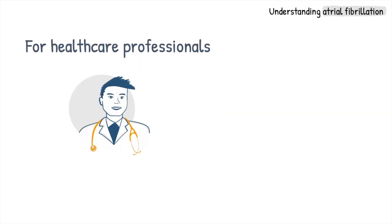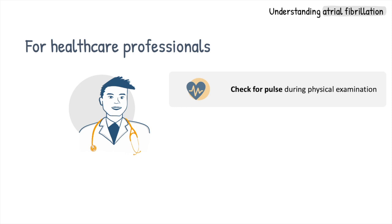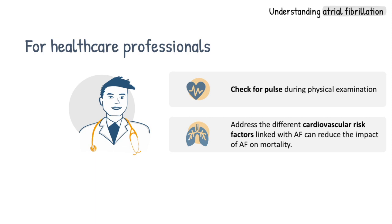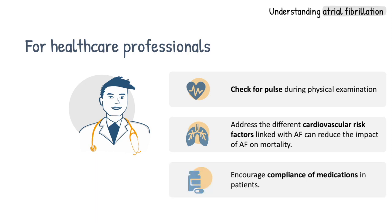As healthcare professionals, when we are seeing patients, taking 30 seconds during physical examination to screen for irregular pulse can help identify asymptomatic AF. Also, take the chance to educate patients on how to check their own pulse. Not only is the treatment of AF important, but addressing the different cardiovascular risk factors linked with AF — such as ensuring good control of hypertension, encouraging healthy lifestyle habits to promote physical activity and weight loss — can reduce the impact of AF on mortality. Encouraging compliance with medication is also important, and educating patients on the rationale behind their medications and answering questions can promote compliance.